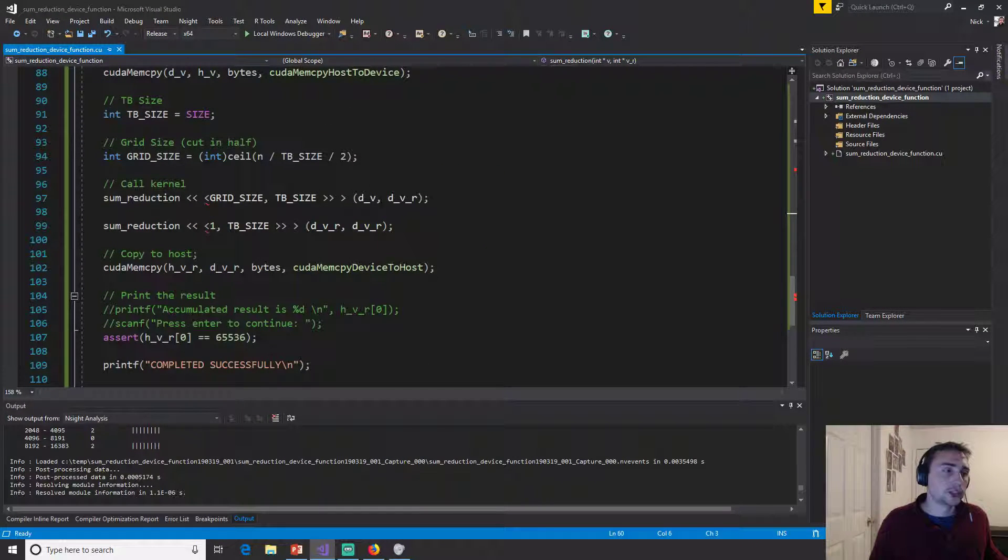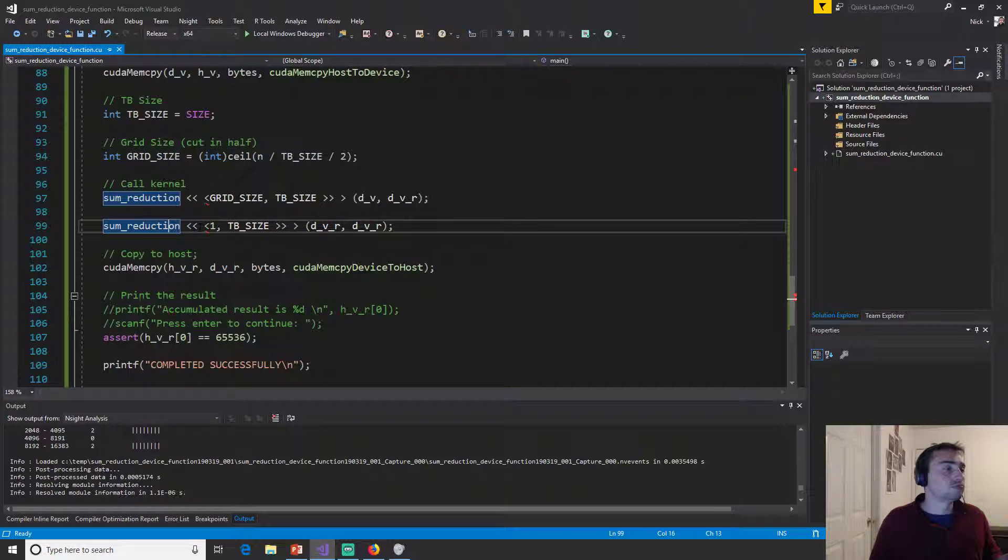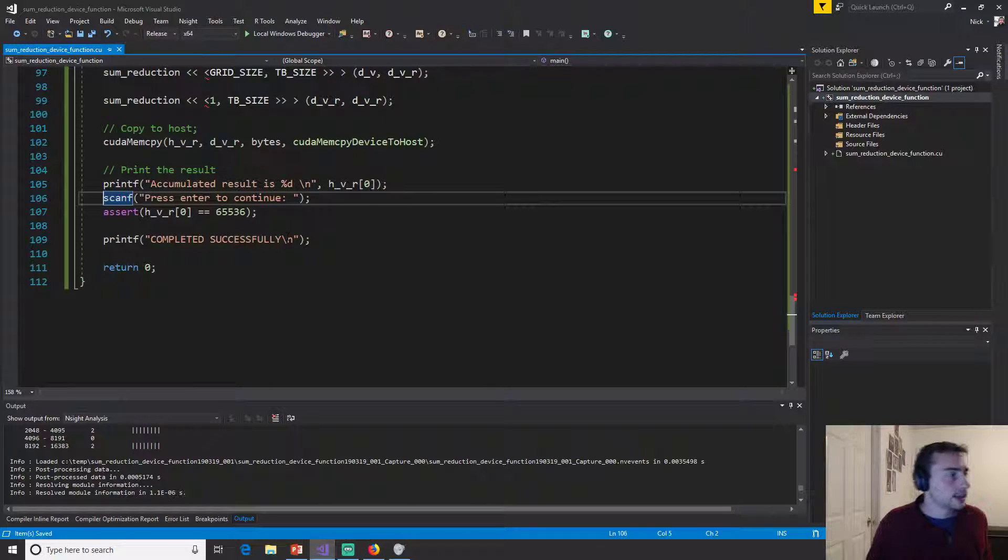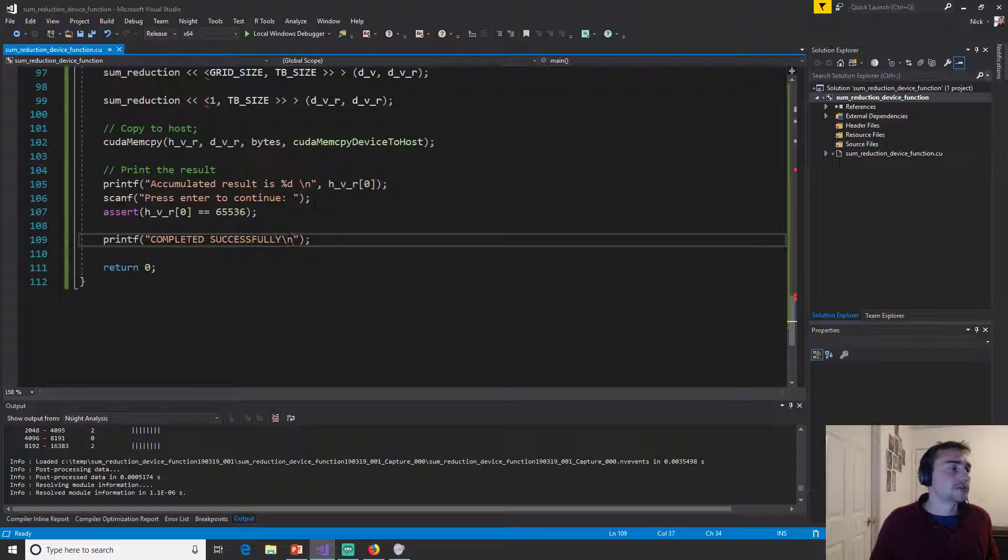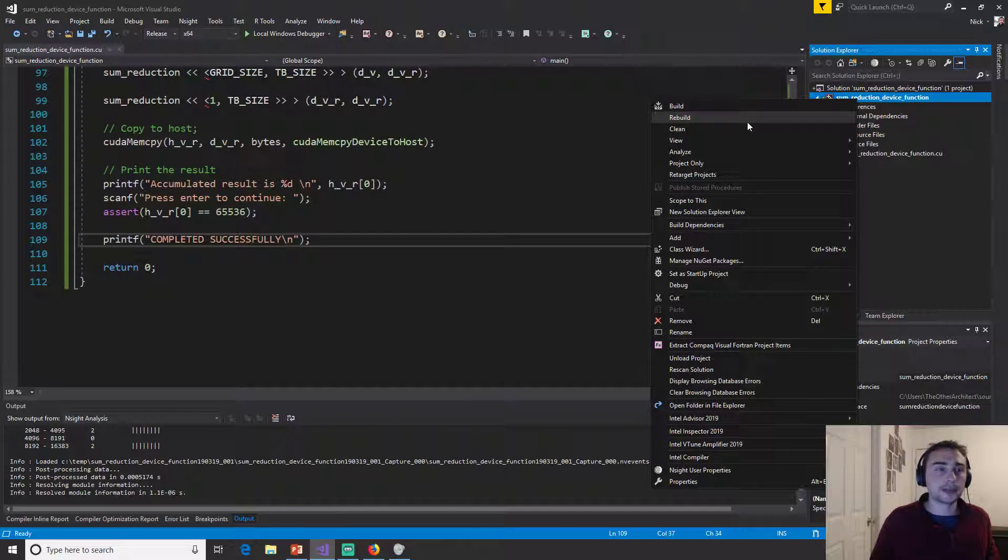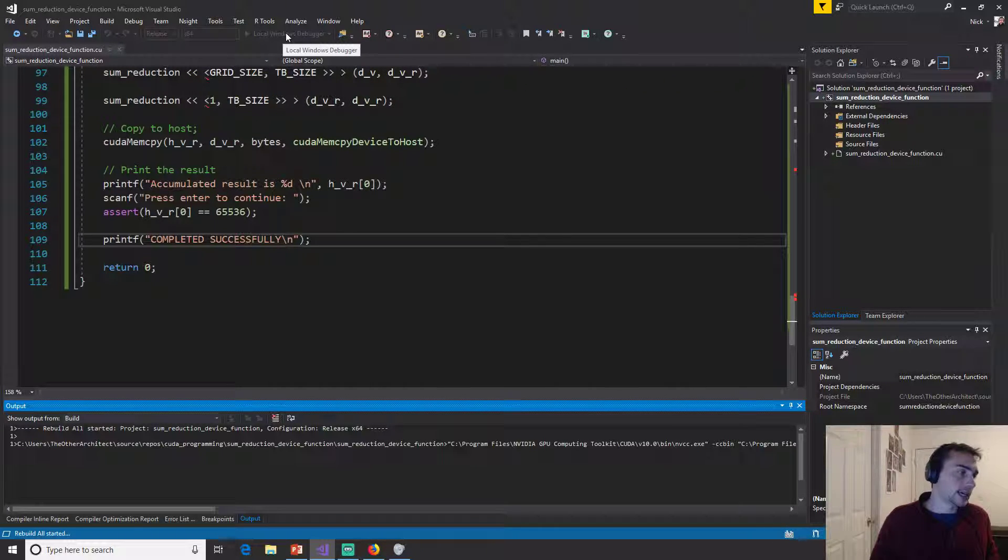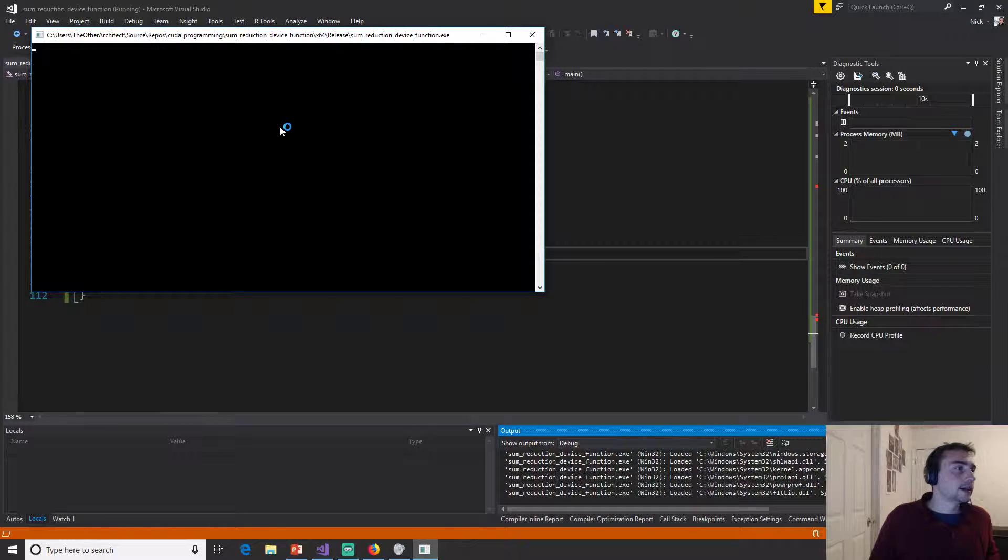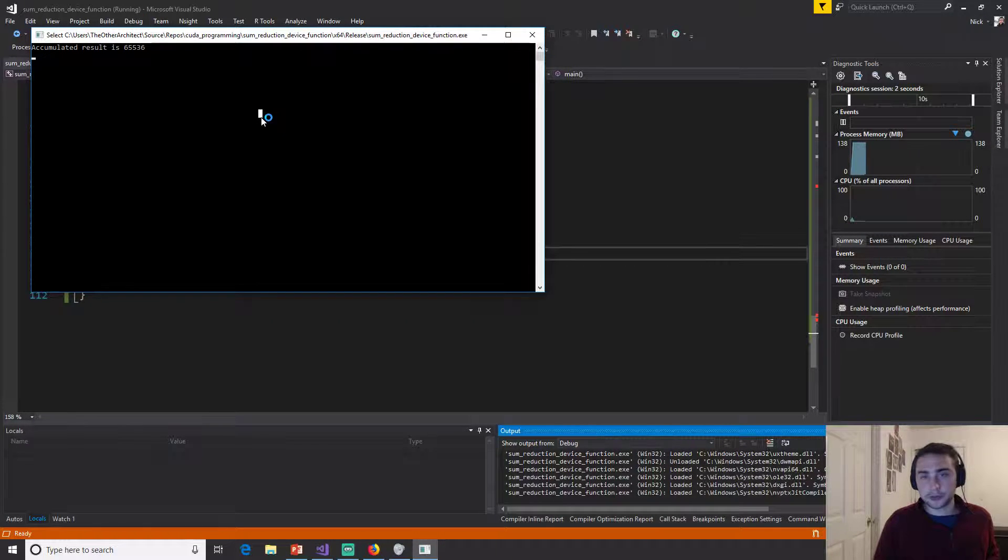And then down here we're going to do the exact same call to sum reduction twice - one for the first major reduction until we get the size down to a single thread block, and then because GPUs don't have global synchronization mechanisms we're using kernel invocations for global synchronization. Of course we'll do some asserts and we'll do this quick printf and scanf just to verify that we get the correct result. So let's go ahead and rebuild this and launch it after it builds. All right, there we go. We got the correct results of 65,536.